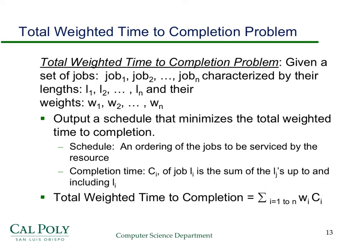In a previous video I discussed coming up with a potential greedy algorithm for solving the total weighted time to completion problem. You've got a set of jobs 1 through n characterized by their lengths and their weights, and what you want to do is come up with an ordering of the jobs that minimizes the total weighted time to completion. The completion time of a job is the sum of the lengths of all jobs before it plus the length of that job, and then for each job you get a weight times its completion time, and you add that up for all the jobs.